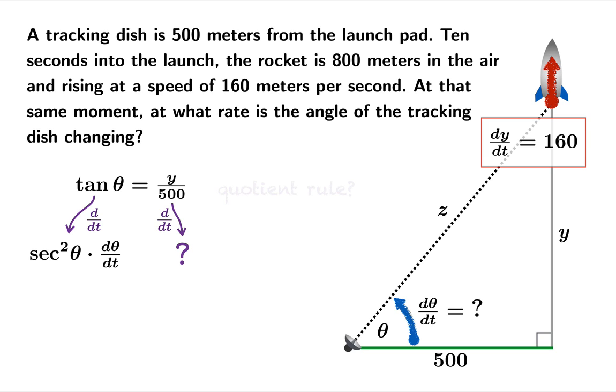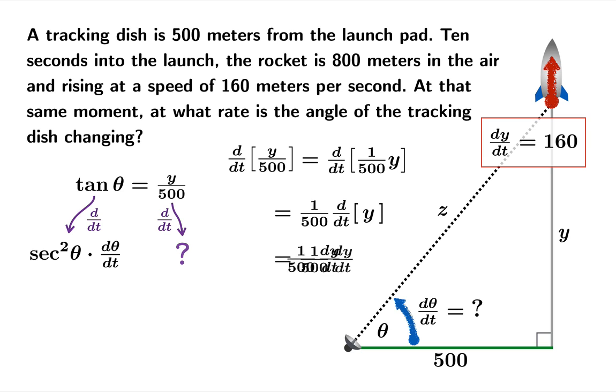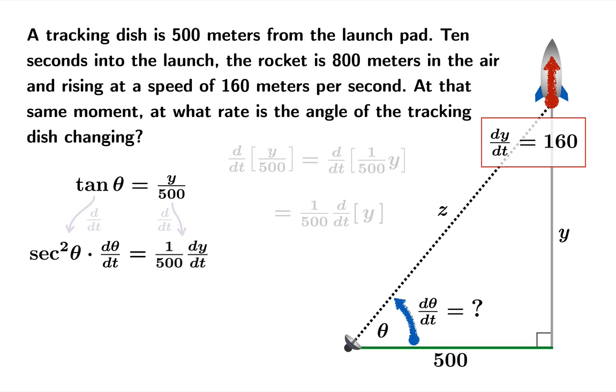Now you might think we should use the quotient rule, but I hope you sort of recoil in horror at that thought because that's overkill. We don't need the quotient rule for this. The way to think about this is y over 500 is really 1 over 500 times y. That's a constant, that 1 over 500. So it can slide out of the differentiation process. And that derivative is just 1 over 500 times dy/dt.